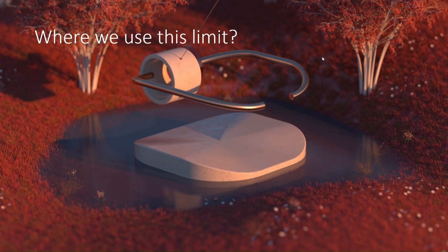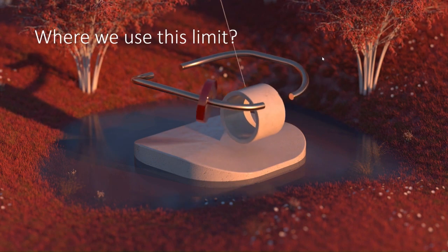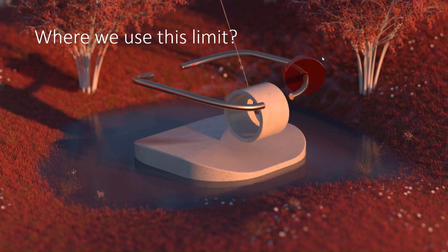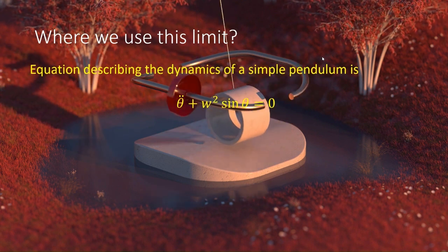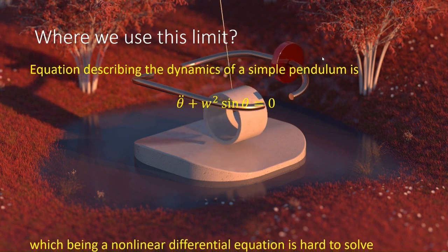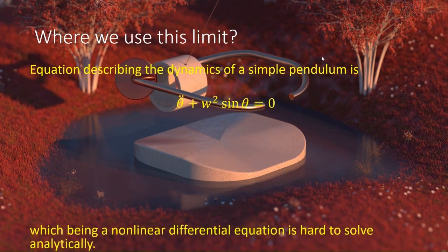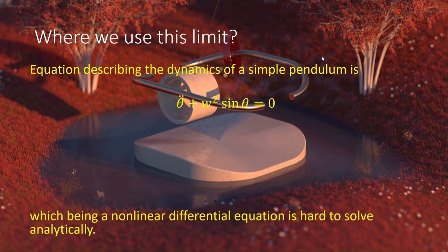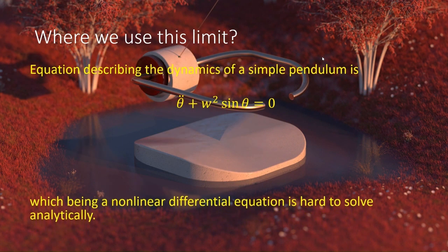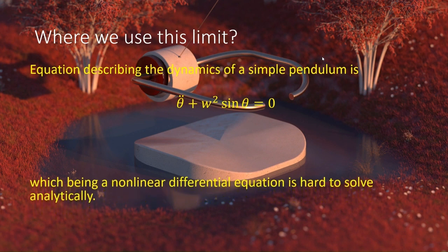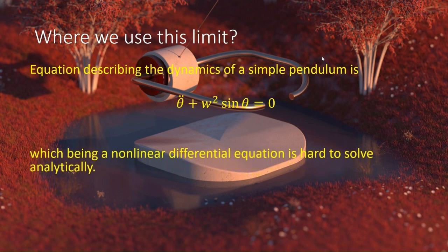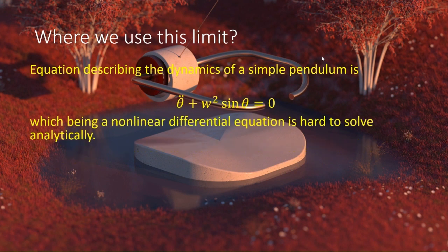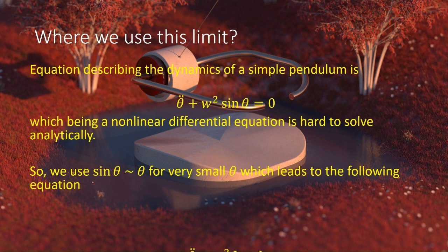If you talk about a specific example, we have a simple pendulum. If we have a look at the equation governing the simple pendulum, we have this equation theta double dot plus omega square sine theta equals zero, where theta represents the angular displacement and theta double dot represents the angular acceleration. Now this being a nonlinear differential equation is hard to solve analytically, but we want to solve it. So we will use an approximation which is nothing but sin(theta) is approximately same as theta for very very small value of theta.